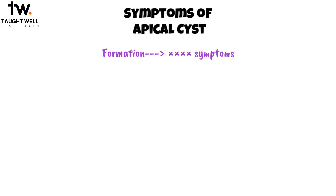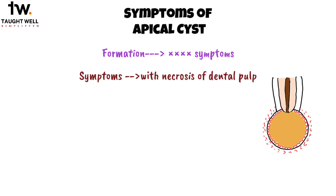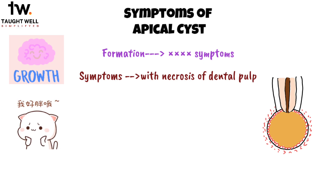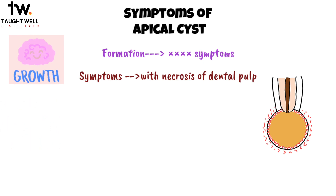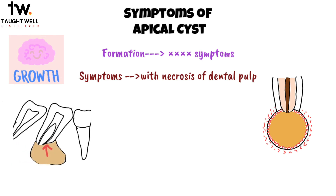The formation of a cyst typically occurs without any noticeable symptoms, except coincidentally when it's linked to the necrosis of the dental pulp. However, as the cyst grows, the pressure it exerts can lead to certain effects. This pressure may become strong enough to cause the affected teeth to shift, mainly due to the accumulation of cystic fluid.